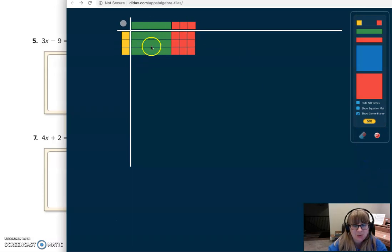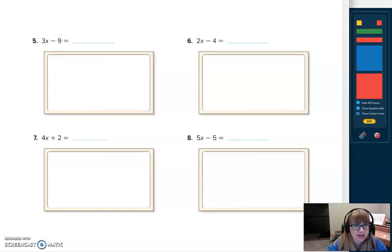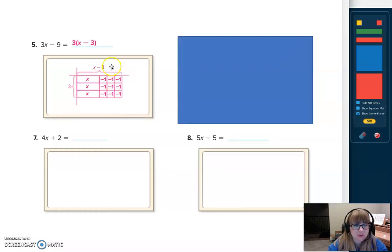All right. So let's take a look. 3x minus 9. Here's my 3x tiles. My negative 9 tiles. I can see that I can form a rectangle that's x minus 3 by 3. So that gives me this beautiful rectangle here. And we would write it as 3 times the quantity x minus 3.